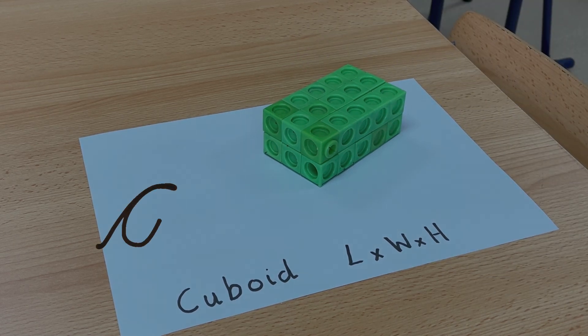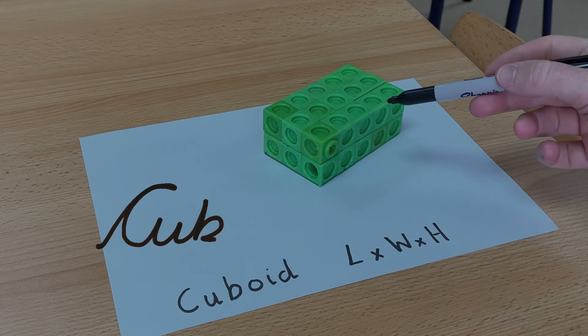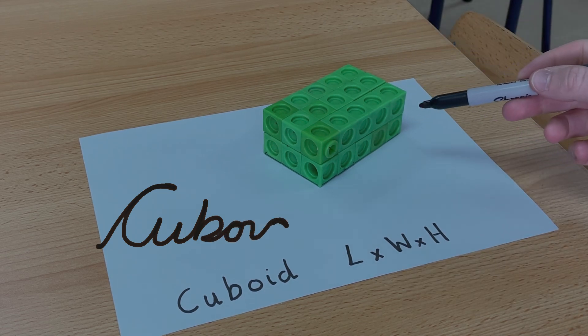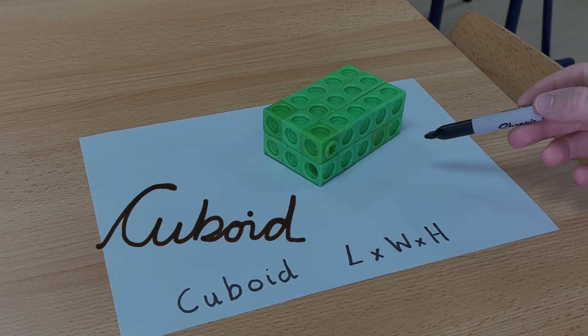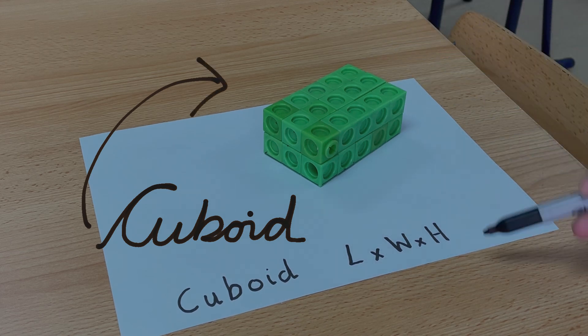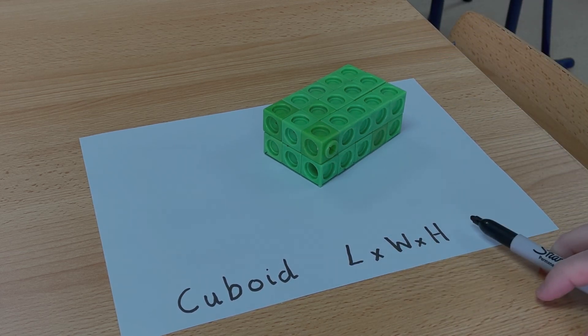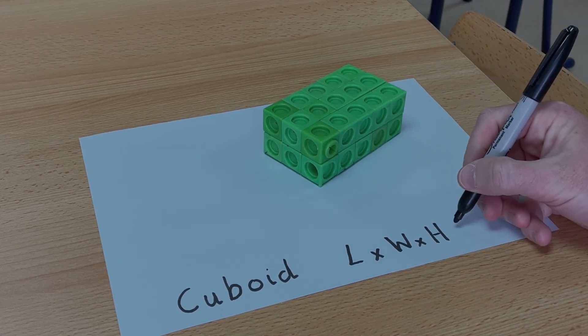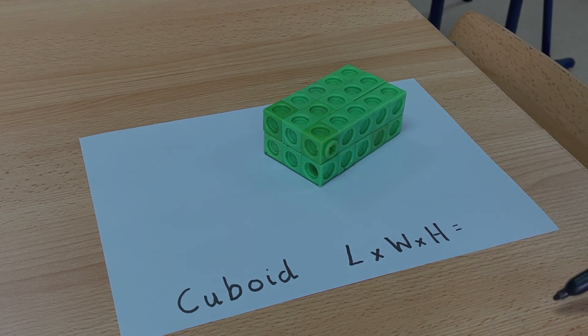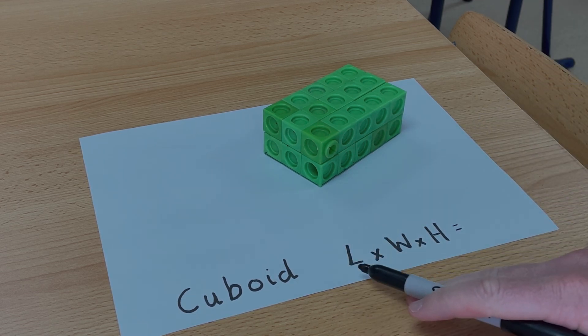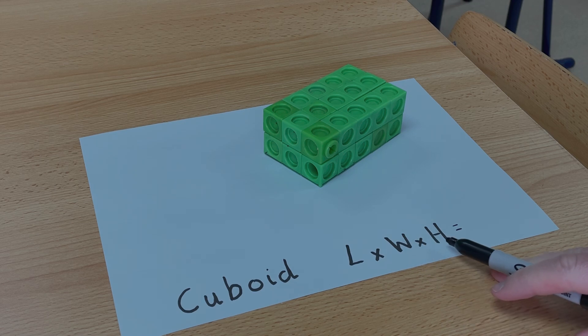I'm going to start with working out the volume of this cuboid here in front of me. Now before we work out the volume of this cuboid, we need to know this formula here. We need to know that to find out the volume, you multiply the length by the width by the height.